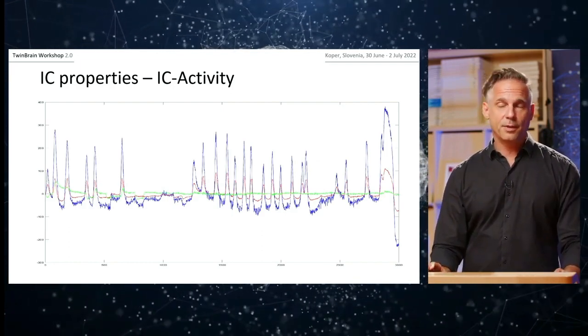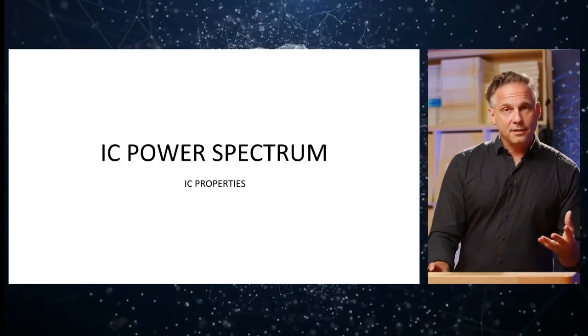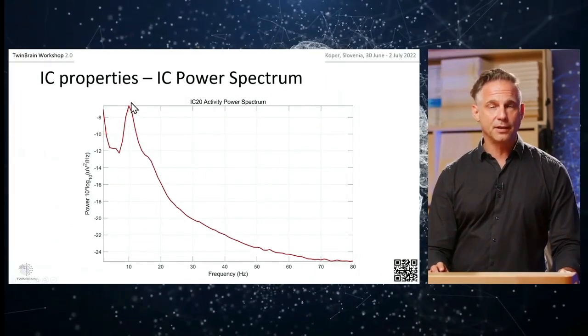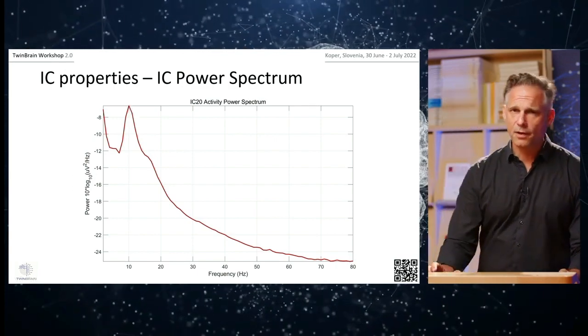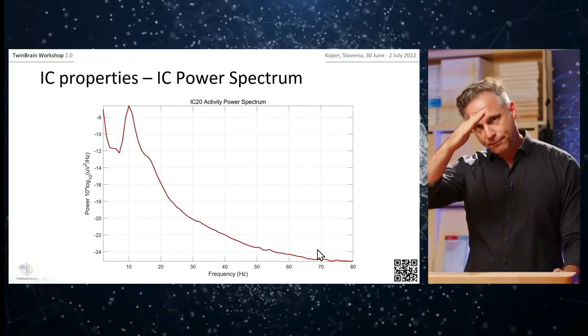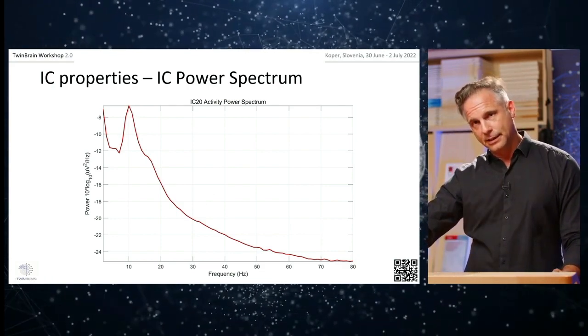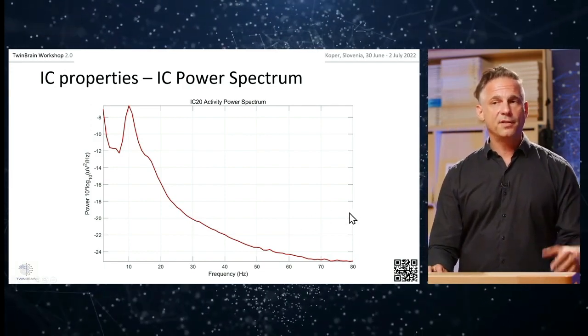For other components it may not be as clear, but it's still helpful. The second dimension for deciding whether to remove an IC is the power spectrum. For brain components, the power spectrum typically shows a strong peak around 10 Hz, along with the classical 1/f decrease — power decreases with increasing frequency. This is observed in most components.